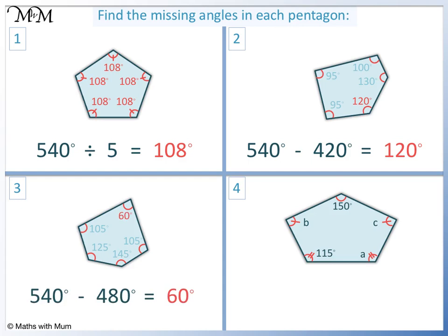Question 4. Angle A is the same as this angle. So it is also 115 degrees. 115 plus 115 equals 230. Plus 150 equals 380.